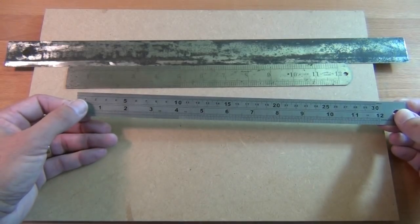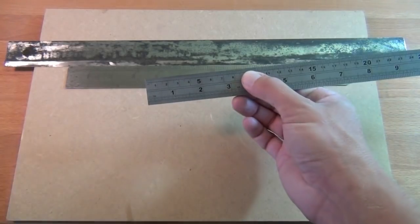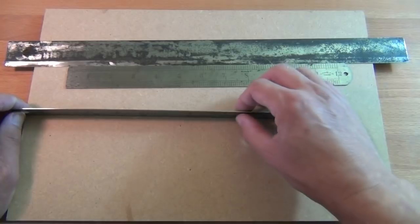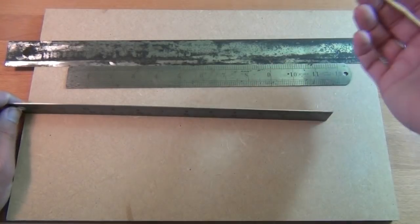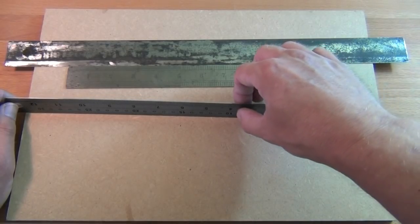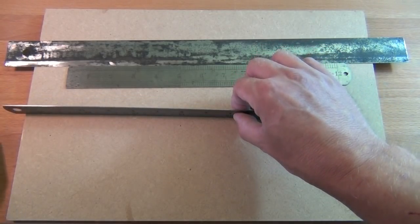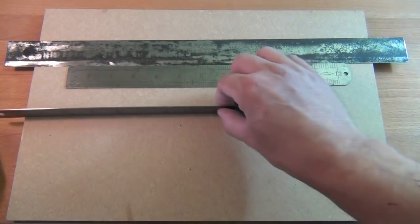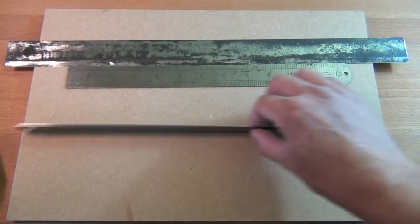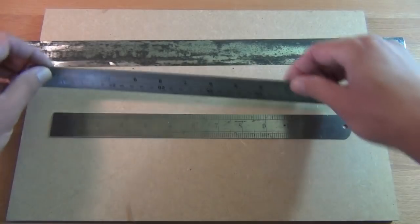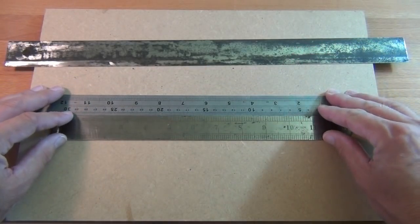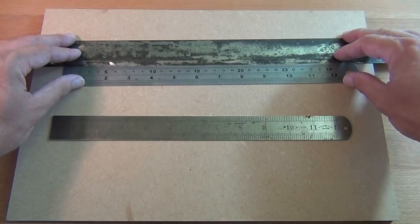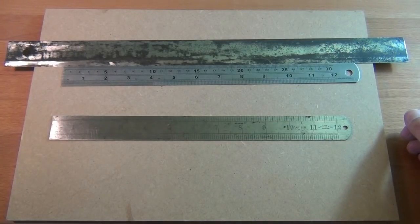And what we will now do is work on that high point by holding the rule perpendicular to a flat surface with some wet and dry paper on it, holding the rule between thumb and forefinger above the point where we think it's highest and just working it slightly backwards and forwards across the paper, and frequently coming back and retesting against both the other steel rule and the straight edge.